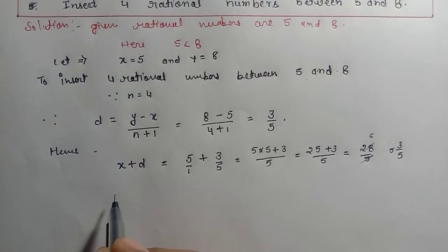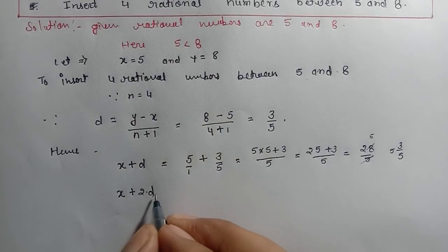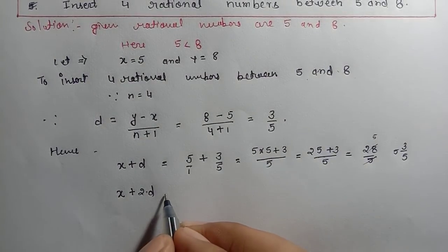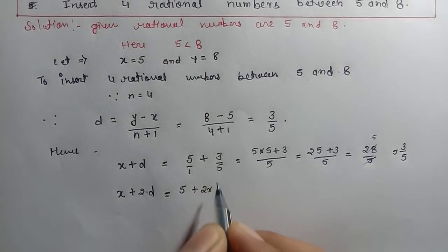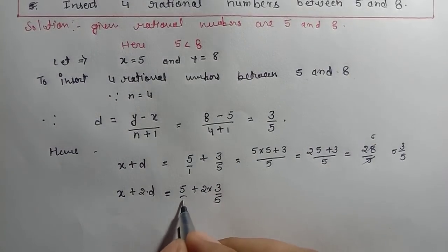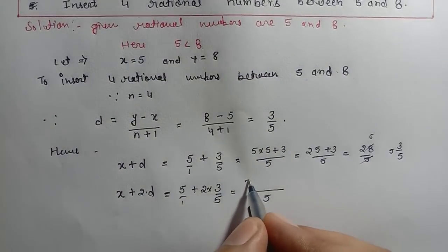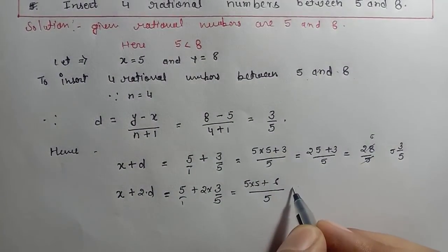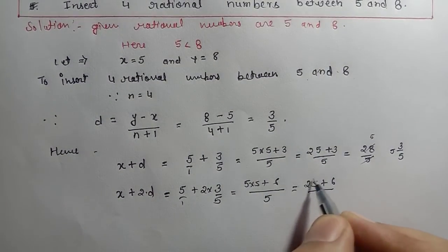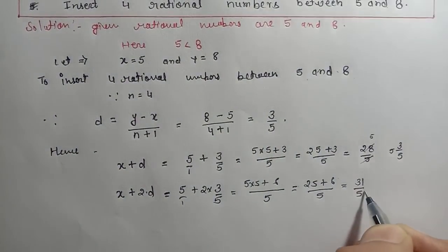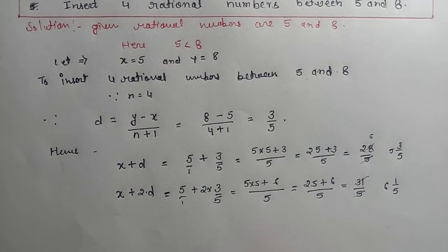For the second rational number, we do x plus 2d. So 5 plus 2 multiplied by d, which is 3 by 5. Taking LCM of 5 and 1, which is 5: 5 into 5 is 25, plus 2 times 3 is 6, giving us 25 plus 6 by 5, which is 31 by 5. This is your second rational number.